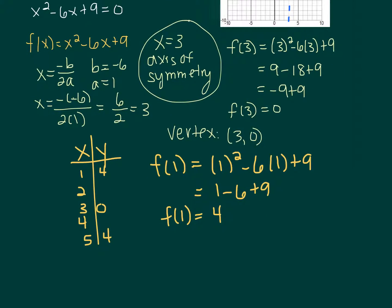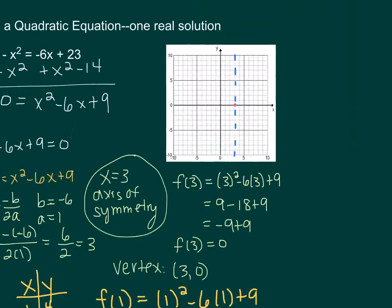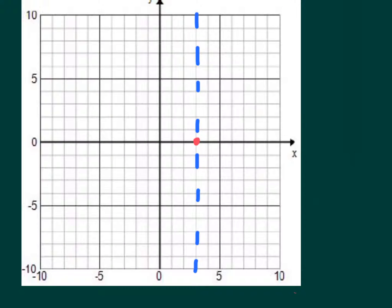And let's find one more: f(2). So 2² minus 6 times 2 plus 9 is equal to 4 minus 12 plus 9. 4 minus 12 is negative 8, and negative 8 plus 9 is 1. So f(2) equals 1, so is f(4). And so it was 4, 1, 0, 1, 4. So we're going to finish graphing those here. And then 5, 4, and 1, 4.